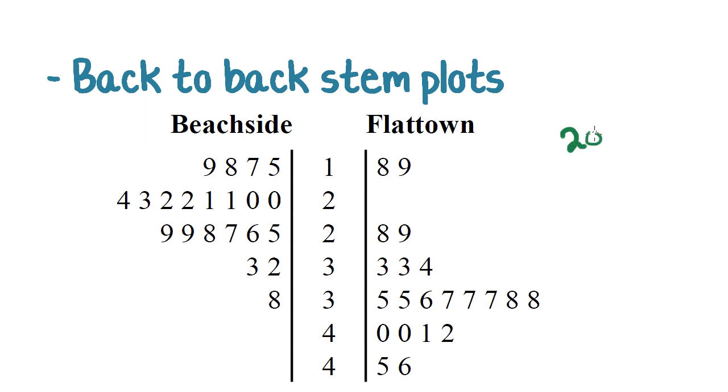This is one that appeared on the 2006 Exam 1, so the multiple choice, and there were three questions that related to this back-to-back stem plot. One was to do with whether they're categorical or numerical data, another one was to do with finding the range, and another one was to do with describing the shape.